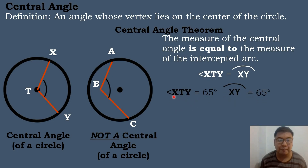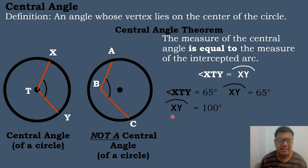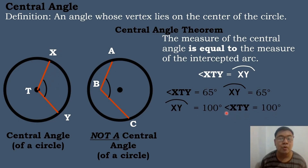If the measure of arc XY is 100 degrees, then the measure of angle XTY, the central angle, is also equal to 100 degrees. The central angle and its intercepted arc are equal to each other.